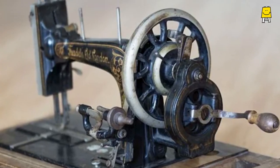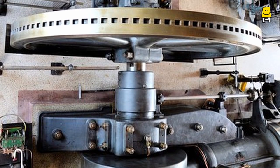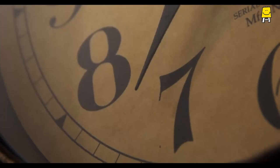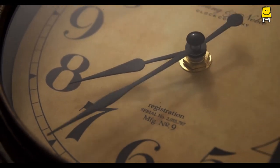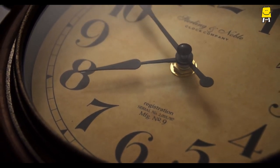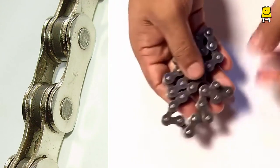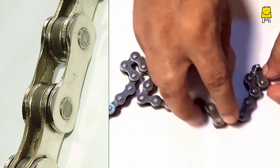Pivot joints are also used in machines where parts rotate in one plane about a point. A simple example of pivoting movement is the rotation of the hands of a clock. The chain of a cycle is a very familiar example of multiple pivot joints put together.